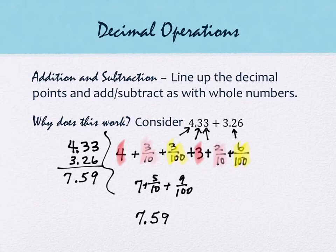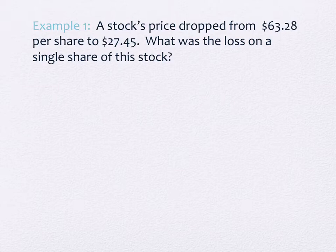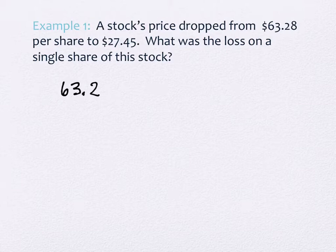Let's do a subtraction example. A stock's price dropped from $63.28 per share to $27.45 per share. What was the loss on a single share? Something is decreasing — we're finding the difference. So I have 63.28, and I'm subtracting 27.45, with my decimal points lined up.